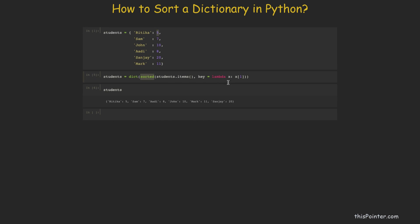By default, the sorted() method sorts contents in ascending order. If you want to sort in descending order, you need to pass the reverse flag as True. Running this code, the dictionary is now sorted by value in decreasing order: 20, 11, 10, 8, and so on.